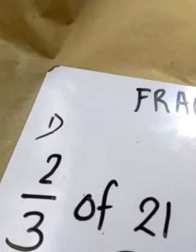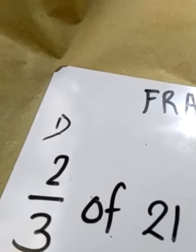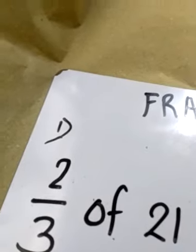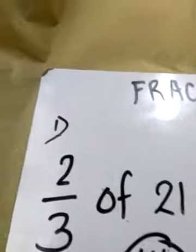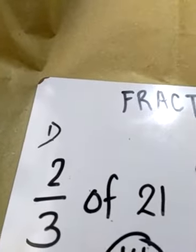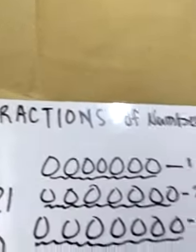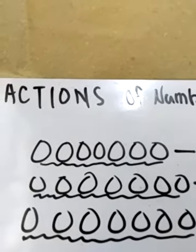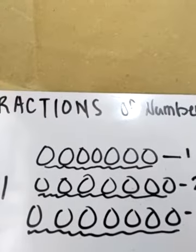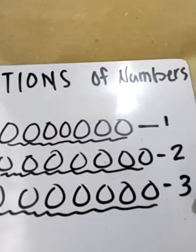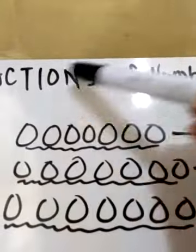Think about the factor of 21. We have 7 and 3. Since our denominator is 3, ibig sabihin tatlong group ang ating bubuohin out of 21. We can see here each group has 7. This is the first group, isang group ng seven. This is another group of seven, and this is the third group of seven that will all total to 21.